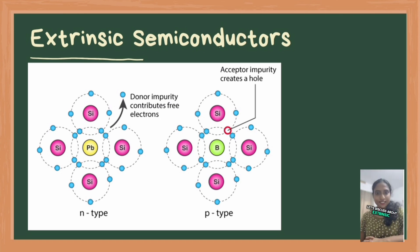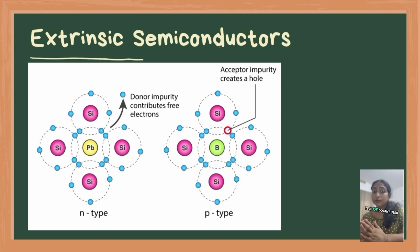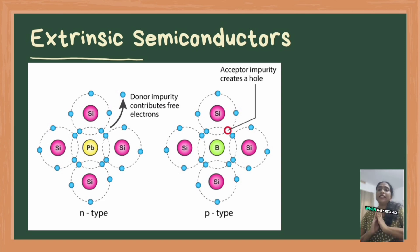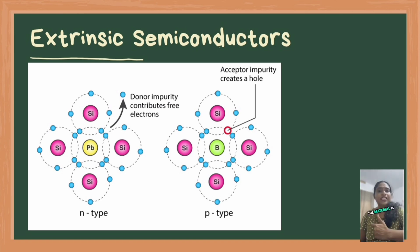Let's discuss extrinsic semiconductors. Extrinsic semiconductors are doped semiconductors with impurities added to improve conductivity. In N-type semiconductors, the material is doped with atoms from group 5 of the periodic table such as phosphorus, arsenic, etc. These dopant atoms have one extra valence electron compared to the semiconductor material. When they replace some of the semiconductor atoms, they create extra electrons in the crystal lattice. In N-type semiconductors, conductivity is mainly due to electrons. The material is entirely neutral, and the concentration of electrons is much greater than that of holes.